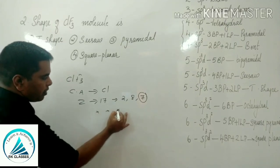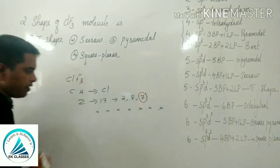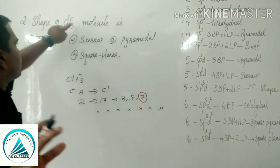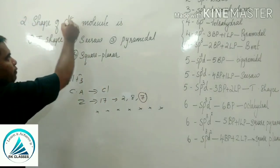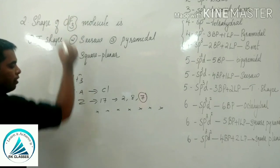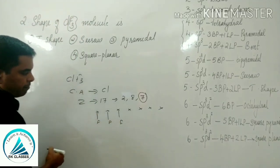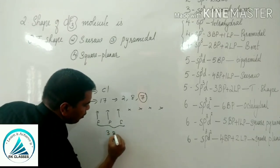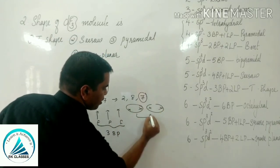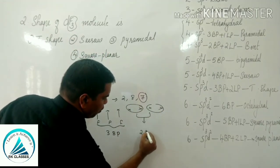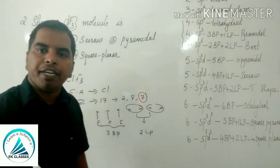Among the 7 valence electrons of chlorine, 3 electrons are utilized to make bonds with the 3 fluorine atoms — giving 3 bond pairs. The remaining electrons form 2 lone pairs. So there are 3 bond pairs and 2 lone pairs.